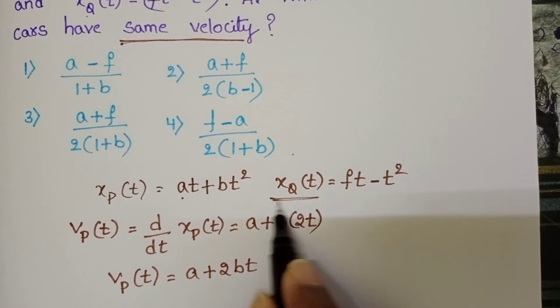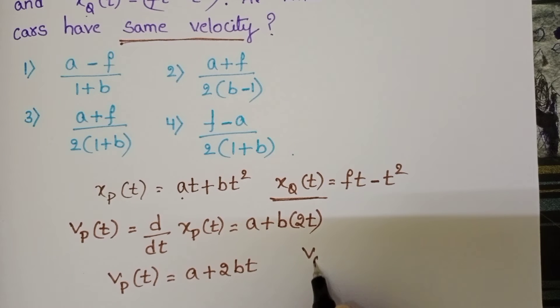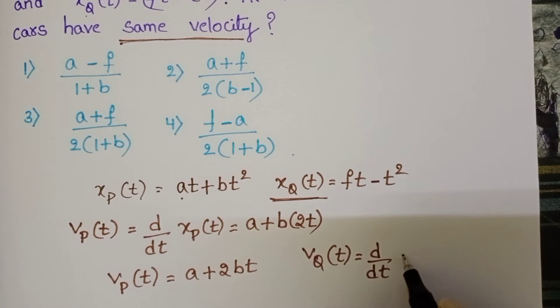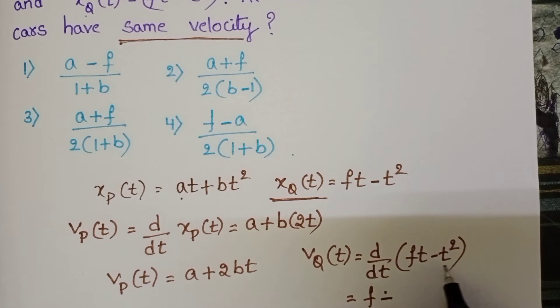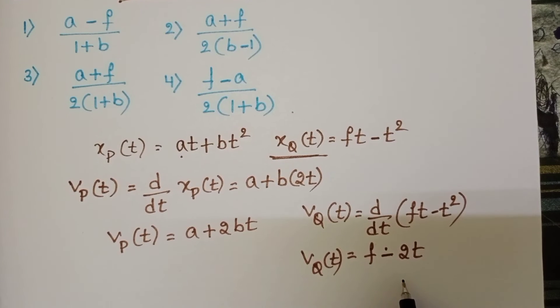Velocity of car Q: Differentiate the given equation with respect to time. d/dt of (ft - t²). F is constant, d/dt of t² becomes 2t. So velocity of car Q equals f - 2t.